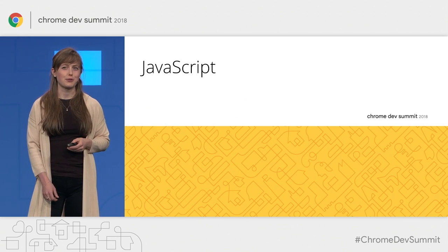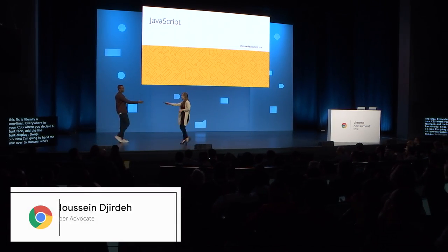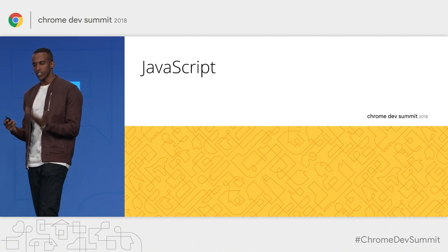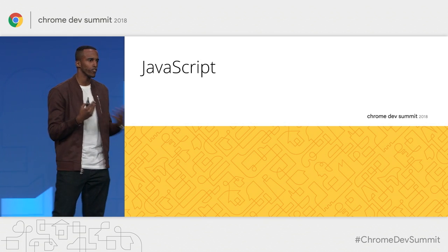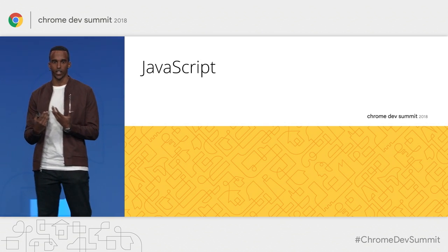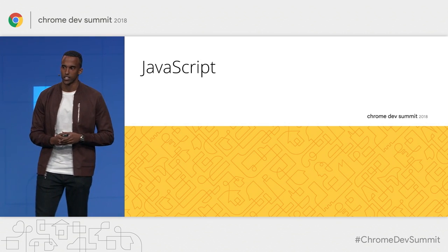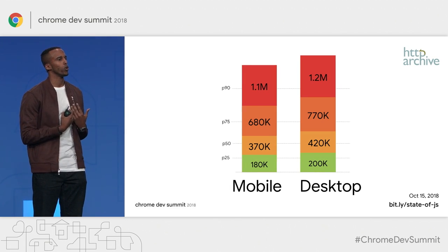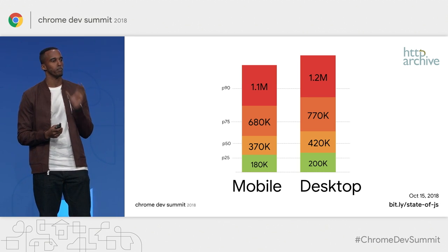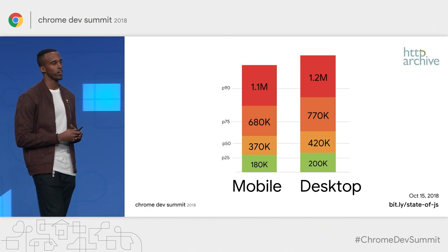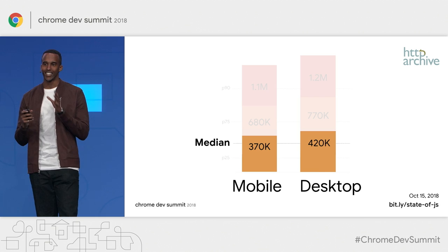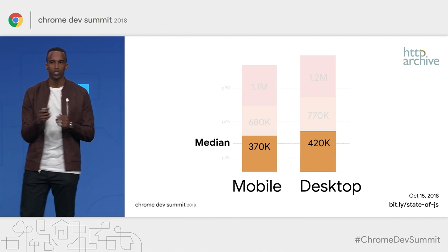Now I'm going to hand the mic over to Hussein, who's going to talk about techniques you can use with your JavaScript. As Katie showed, images can make up the majority of a site with regards to bytes sent. However, we also send a significant amount of JavaScript to browsers. As of last month, the median amount of JavaScript shipped to mobile web pages was about 370 kilobytes, and for desktop the number was about 420 kilobytes.